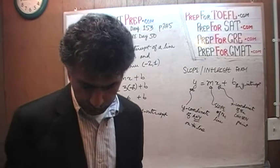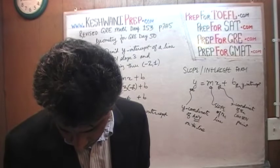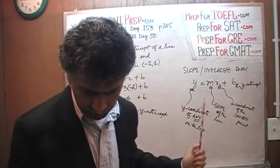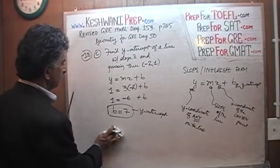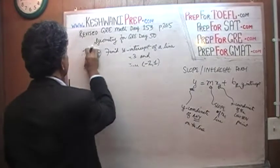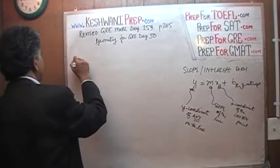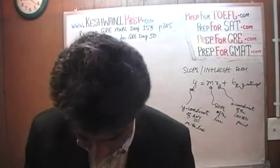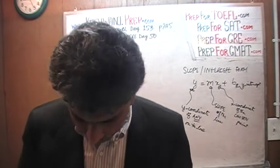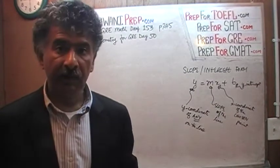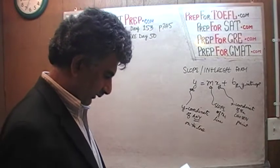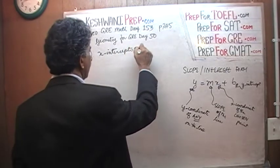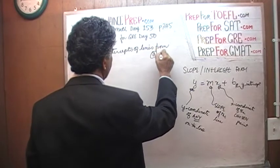That is the y-intercept of the line. That's the end of part C. The problem asked us to find the y-intercept of the line with slope 3 that passes through point negative 2, 1 — and we've done that. Now let's go to part D, the last part. In part D, they are asking for the x-intercept of all the lines we came across in parts A, B, and C.